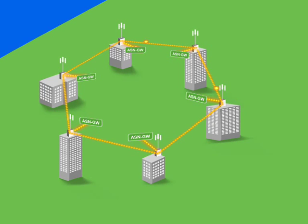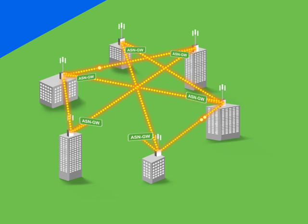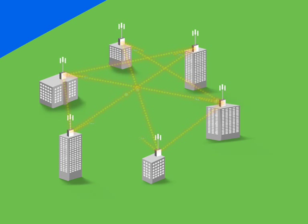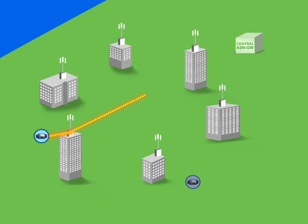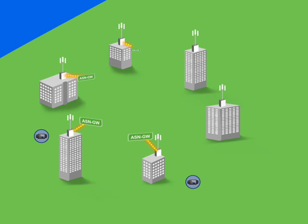Alvarian's distributed ASN gateway approach uses common access backhauling topologies. In a centralized topology, peer-to-peer traffic requires long-distance backhauling to the central ASN gateway. Using Alvarian's distributed architecture, backhaul utilization is highly effective, reducing costs to virtually none.